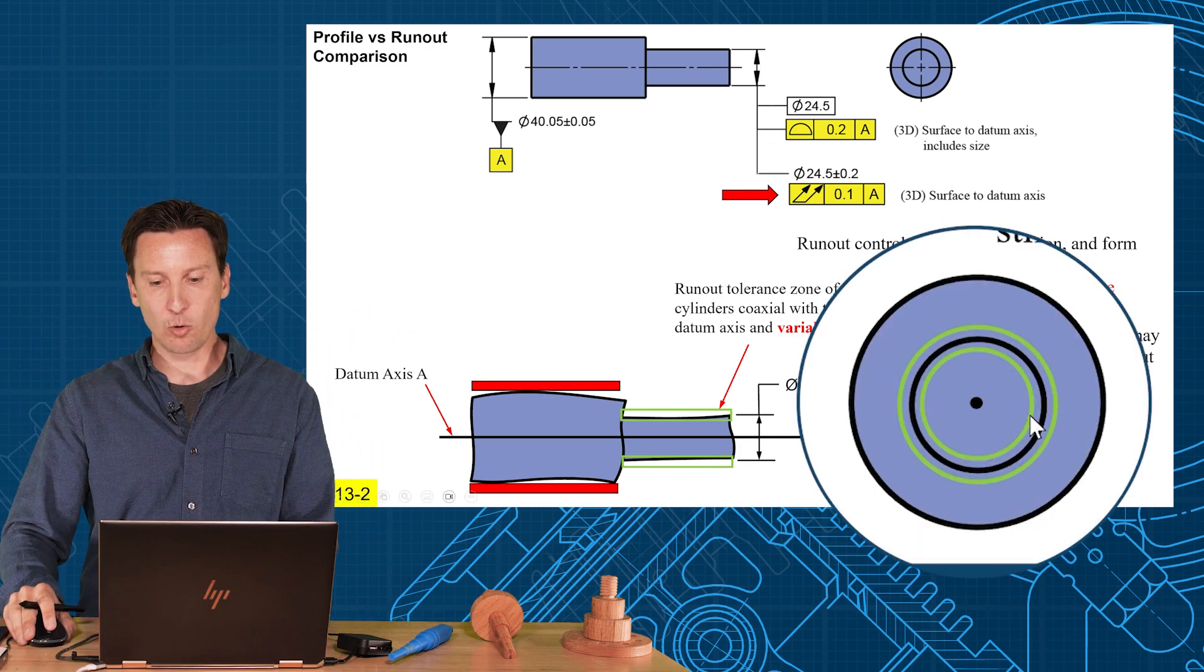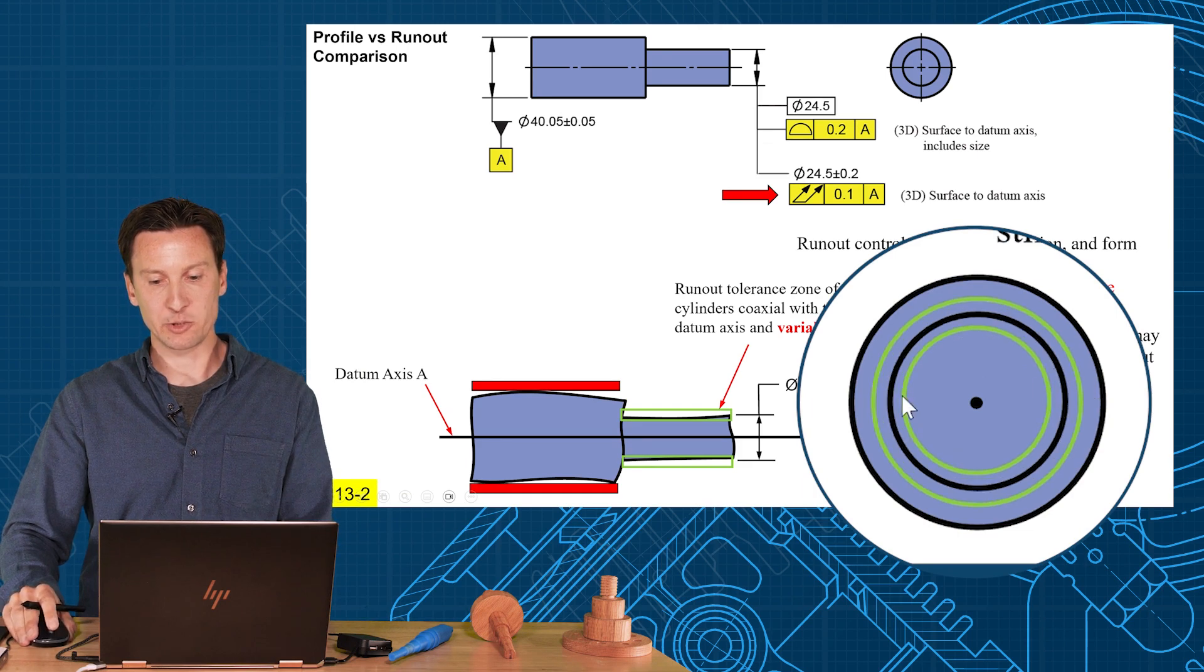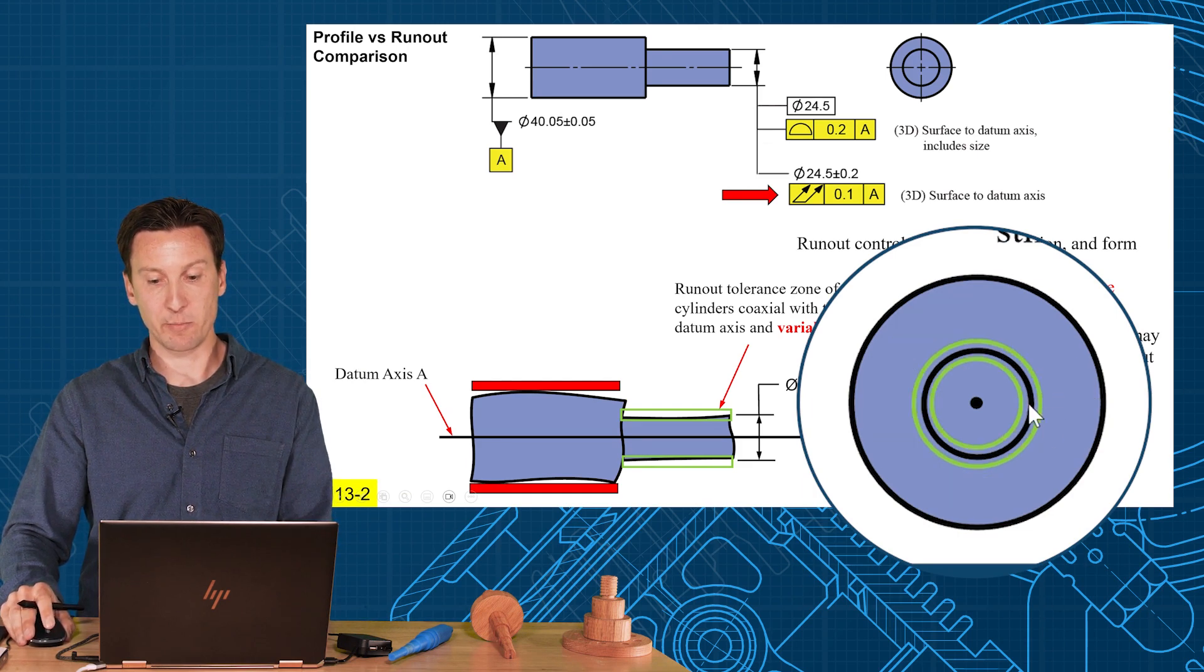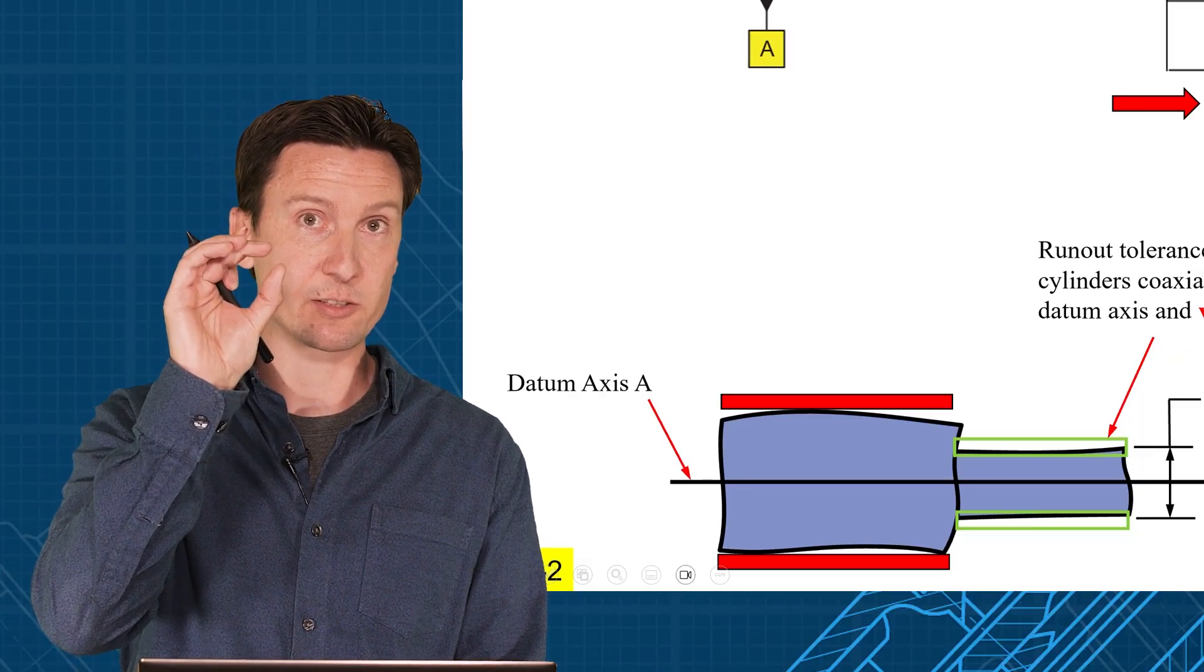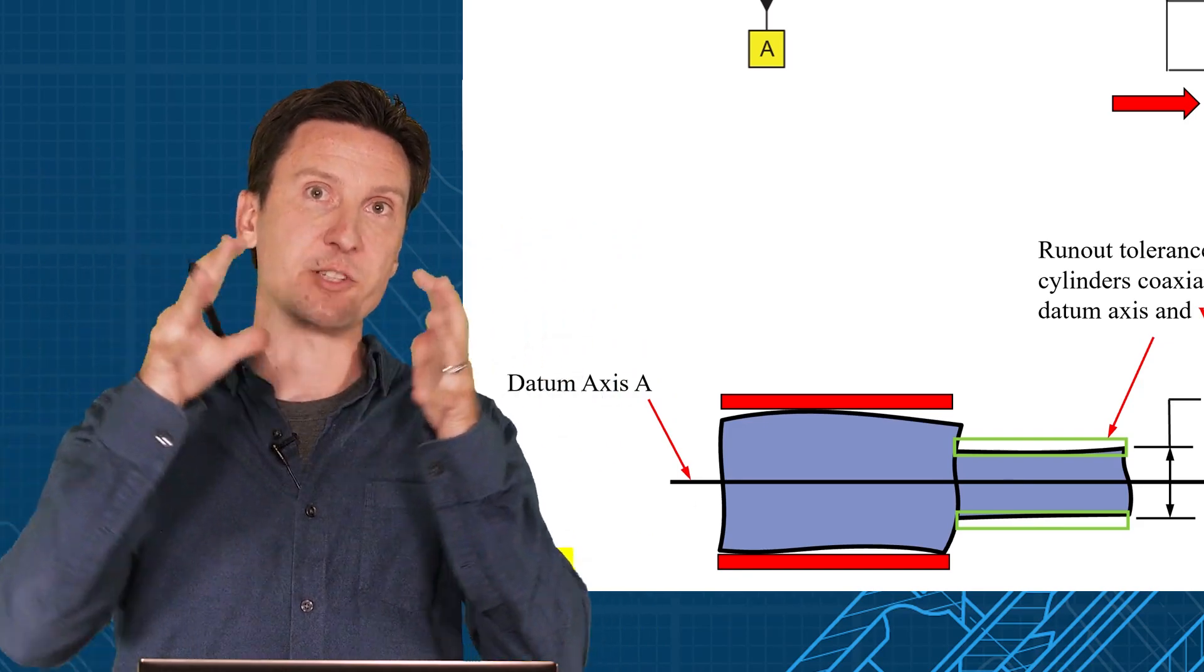Look how a big or a small shaft could still have perfect runout. So you can make a big shaft, has perfect runout, or you can make a small shaft, has perfect runout. So the distances between the two cylinders is fixed, but the size of the cylinders is variable.